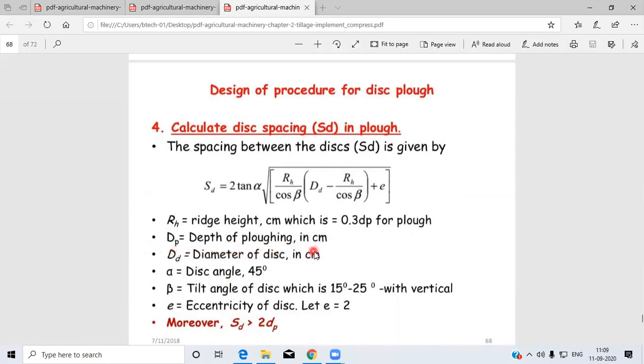dp is the depth of plowing in centimeters, Dd is the diameter of disc in centimeters, α is the disc angle (45°), and β is the tilt angle (15° to 25° with vertical). e is the eccentricity of the disc, taken as 2. The condition is satisfied only when disc spacing is greater than twice the depth of plowing.